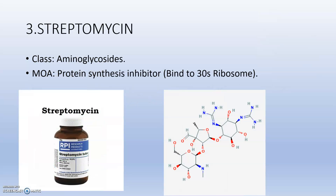The next drug is streptomycin, a very important drug belonging to the class aminoglycosides. Aminoglycosides are protein synthesis inhibitors — they bind to the 30S ribosome and inhibit protein synthesis, including elongation and termination.